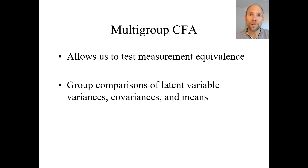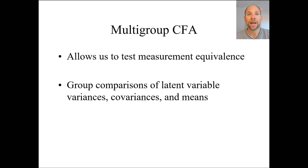Furthermore, multi-group confirmatory factor analysis and general structural equation modeling with latent variables involves variables that are corrected for measurement error. That's another huge advantage because we're looking at variables that are free from measurement error — corrected for unreliability — and therefore those comparisons, for example with regard to latent variable correlations, covariances, and paths, are more accurate if we have an appropriate measurement model.